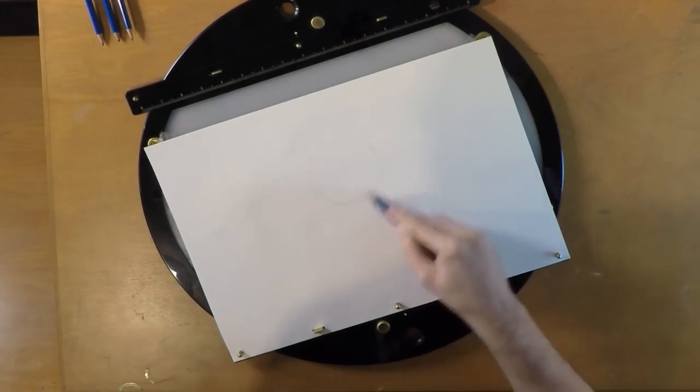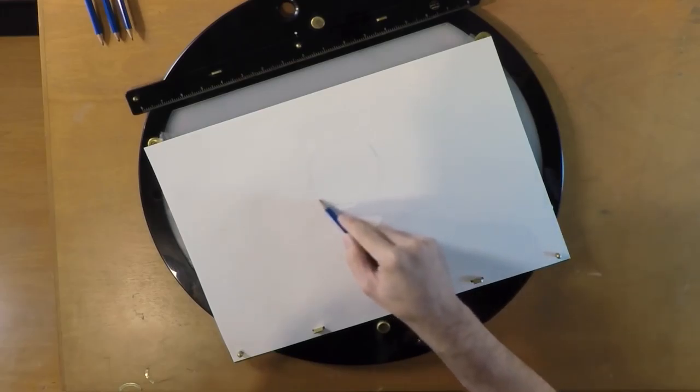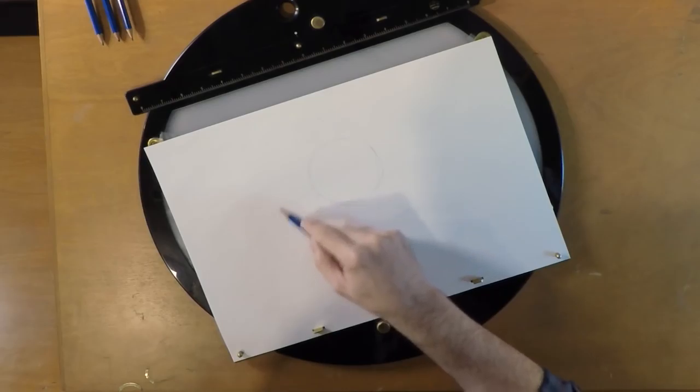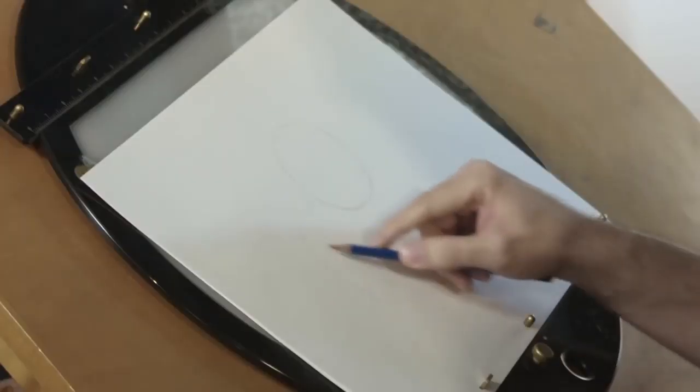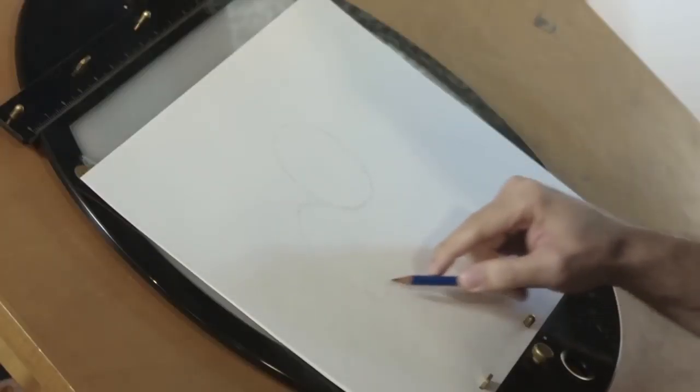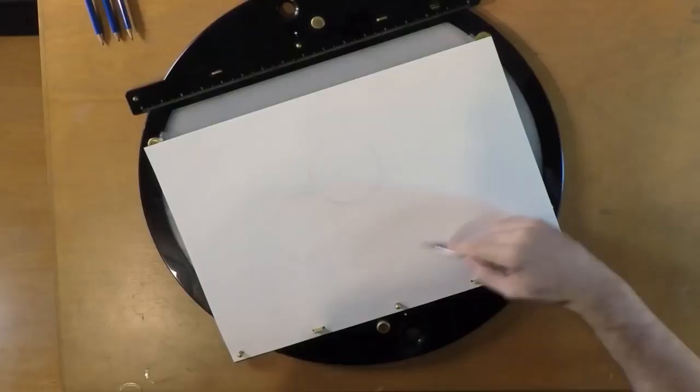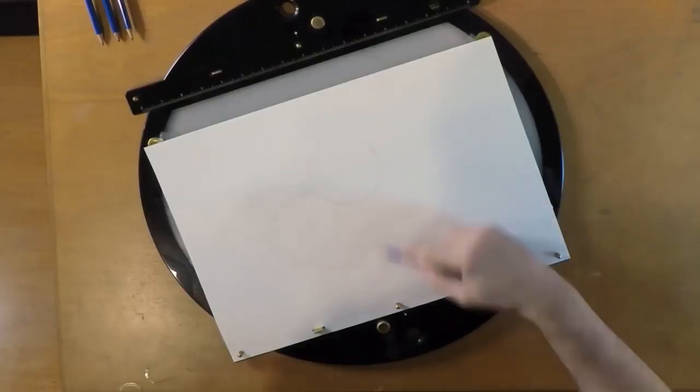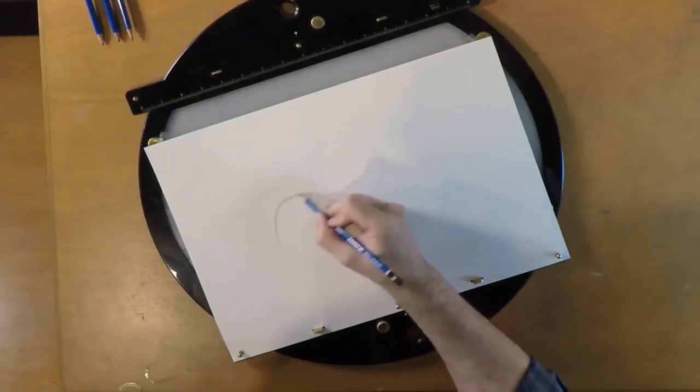So start with a circle on his head, but he has these huge fluffy cheeks so we like to describe his shape as like a basketball sitting in a big beanbag. So the beanbag is his cheeks, his head is the basketball.